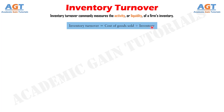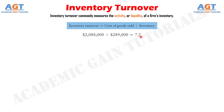Applying this relationship to a company: if cost of goods sold is $2,088,000 and inventory is worth $289,000, then cost of goods sold divided by the inventory gives 7.2 as inventory turnover.